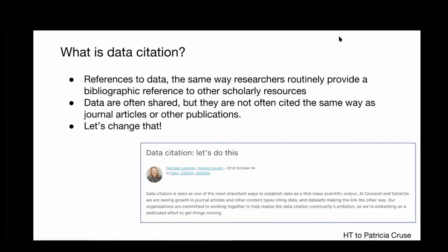Within the Research Data Alliance, a data-literature linking group started under the name of Scholix to establish a framework for exchanging information about relationships between articles and datasets. Some of those building blocks now feed into projects like Make Data Count and Enabling FAIR Data, looking at ways to measure and give credit to researchers for citing data. In simple terms, data citation is just references to data in the same way researchers provide bibliographic references to other scholarly resources. But data is often not cited clearly and consistently in journal articles.